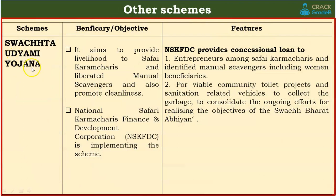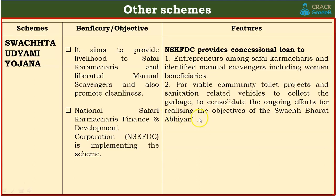Our next scheme is Swachh Udyami Yojana. This scheme has been mainly created for safai karamcharis and liberated manual scavengers to promote entrepreneurship. The implementing agency is the National Safai Karamcharis Finance and Development Corporation (NSKFDC). The government has two objectives: first, to give safai karamcharis and manual scavengers, including women, an opportunity to become entrepreneurs; second, to provide concessional loans for viable community toilet projects, sanitation-related vehicles to collect garbage, and to consolidate the objectives of the Swachh Bharat Abhiyan.